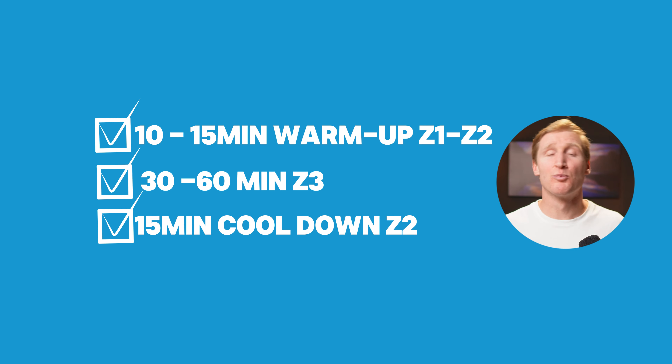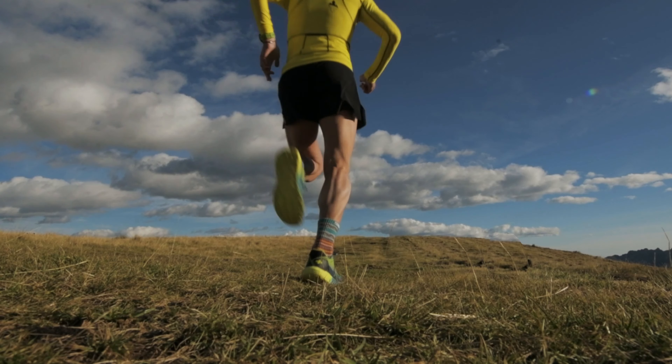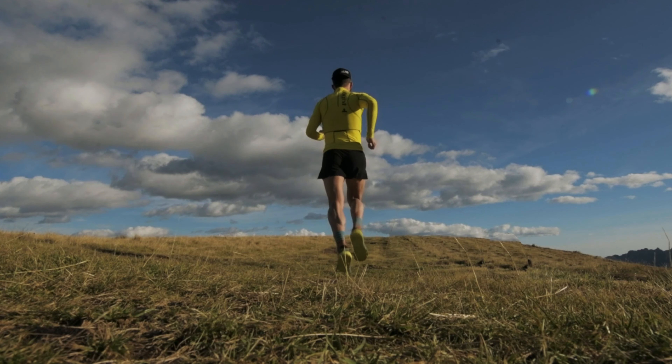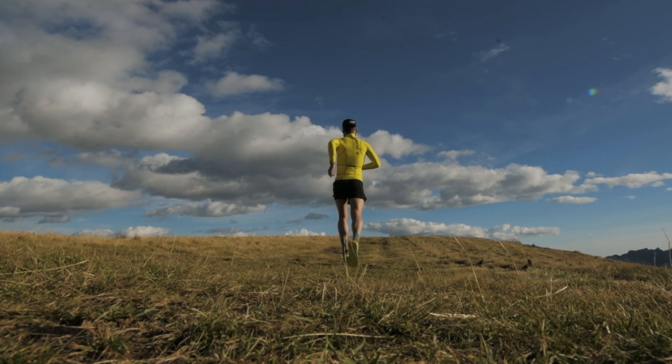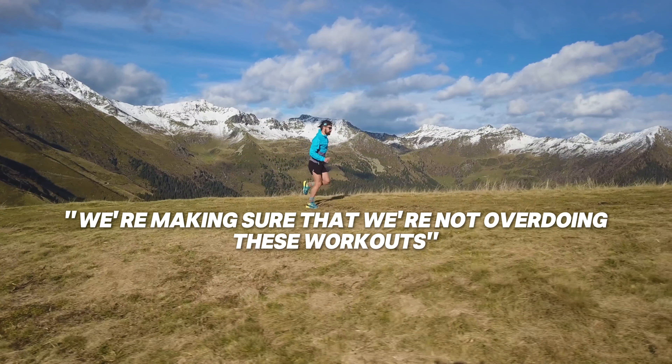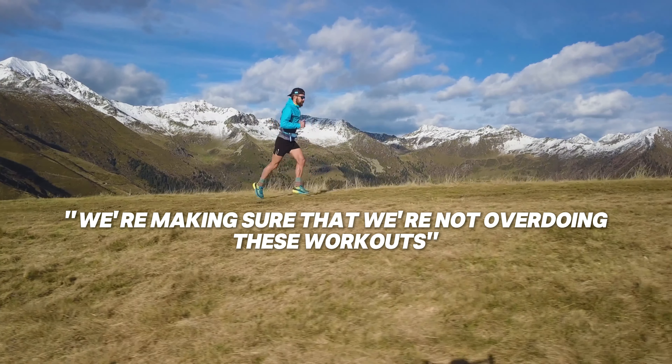Using hilly terrain elicits a breadth of muscle recruitment profiles — long stride length and short ground contact time on downhills, and really large muscle mass recruitment with long ground contact time and short stride length on uphills. By using heart rate as the core metric with hilly terrain, we make sure we're not overdoing these workouts.